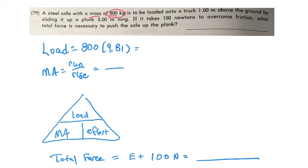These problems we cannot solve using mass. We have to convert them into newtons. So let's do that right away here. We're going to take the 800 kilograms times 9.81 and that will give you the load in newtons.